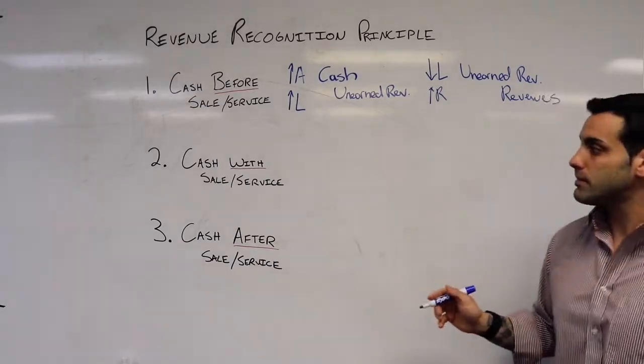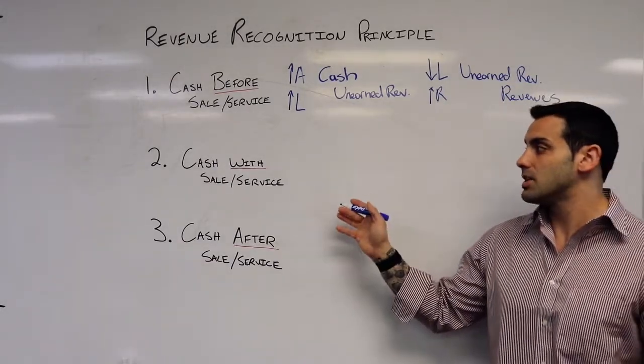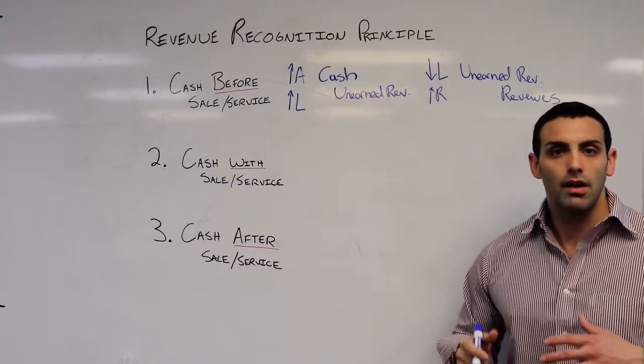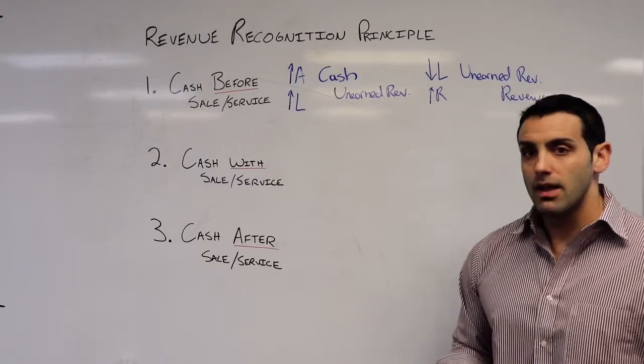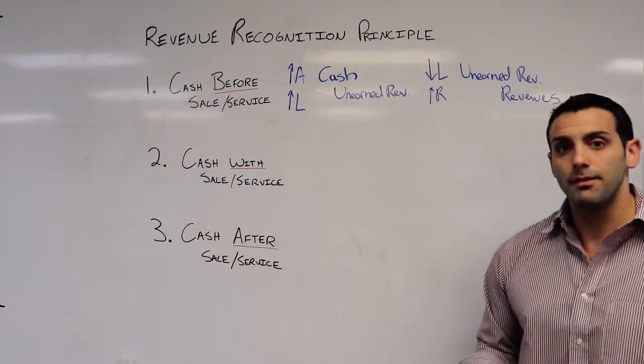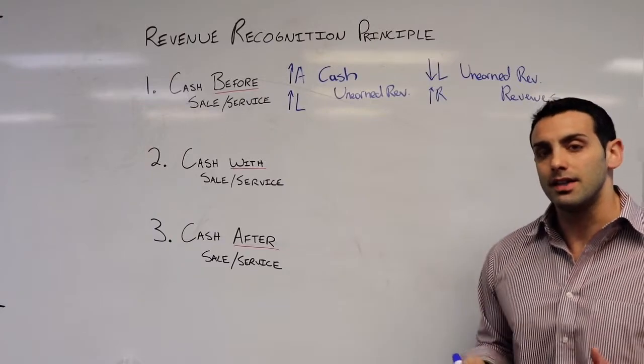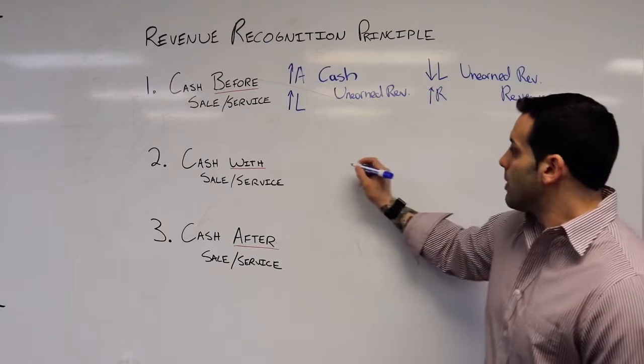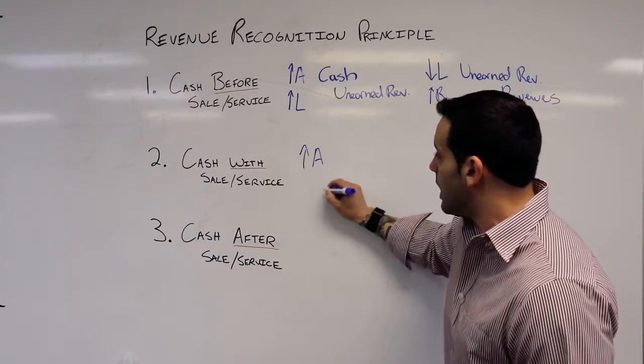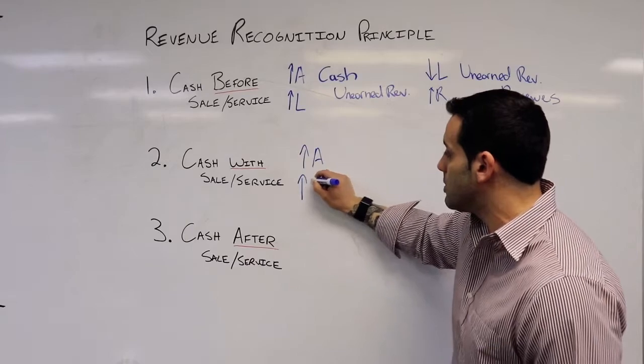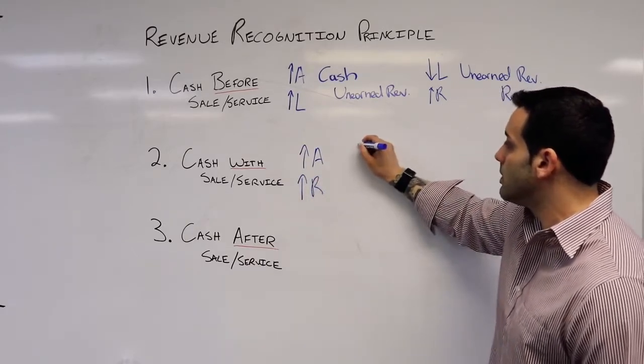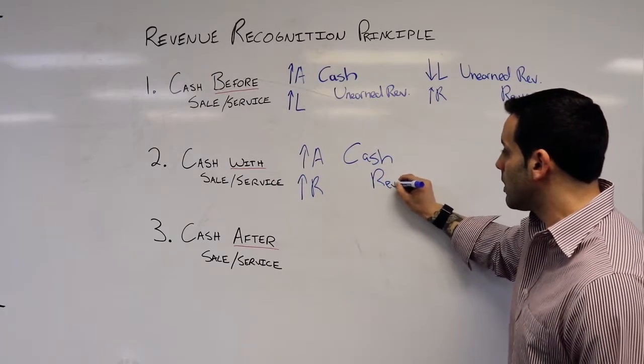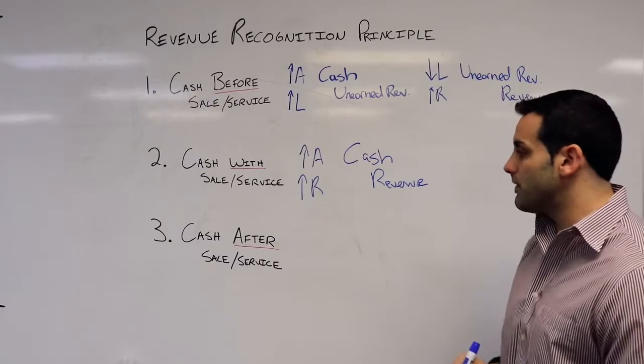Now, in the second example, we are receiving cash simultaneously with the sale or service. And a good example of this is a pizza delivery guy. He hands us our pizza and fulfills his obligation to deliver at the same time we hand him over cash. So we are going to increase the asset and we're going to recognize revenue. So we're going to debit cash and credit sales revenue.